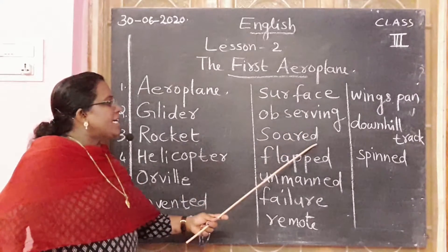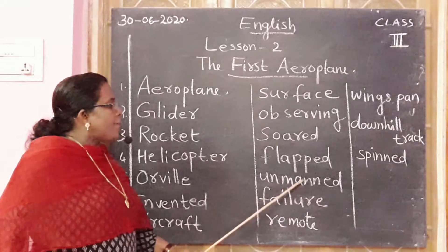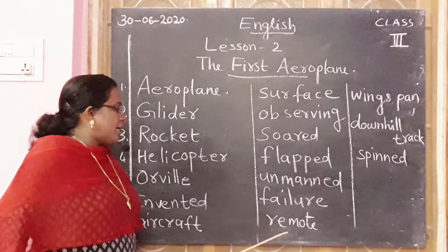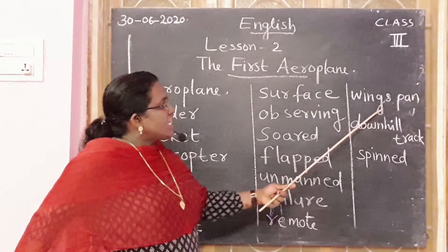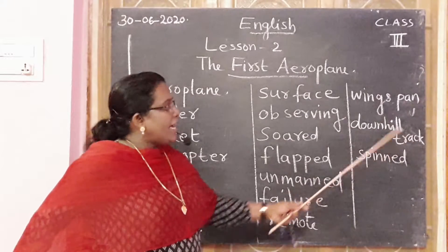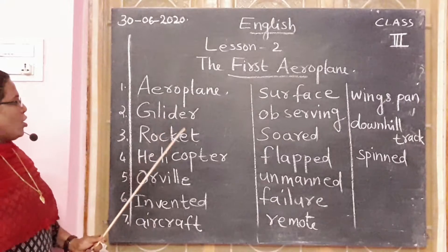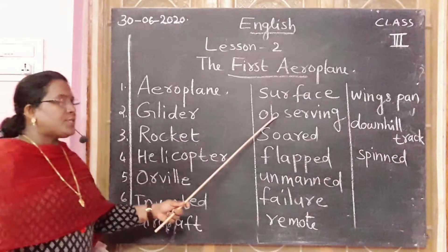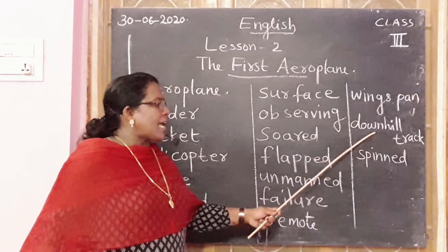Soared: S-O-A-R-E-D. Flapped: F-L-A-P-P-E-D. Unmanned: U-N-M-A-N-N-E-D, unmanned. Failure: F-A-I-L-U-R-E, failure. Remote: R-E-M-O-T-E, remote. Wingspan: W-I-N-G-S-P-A-N, wingspan. Downhill track: D-O-W-N-H-I-L-L T-R-A-C-K, downhill track. Spinned: S-P-I-N-N-E-D, spinned. Review: aeroplane, glider, rocket, helicopter, invented, aircraft, surface, observing, soared, flat, unmanned, failure, remote, wingspan, downhill track, spinned.